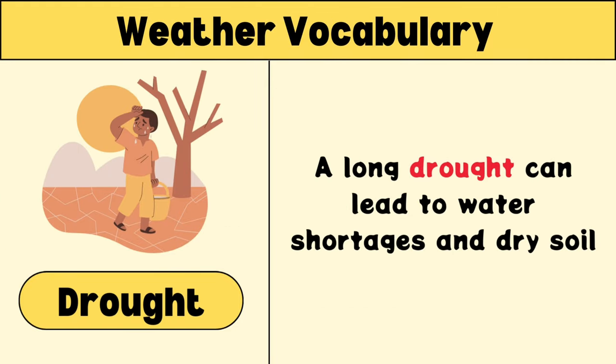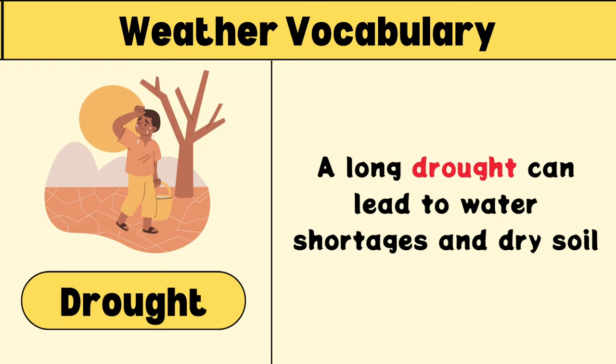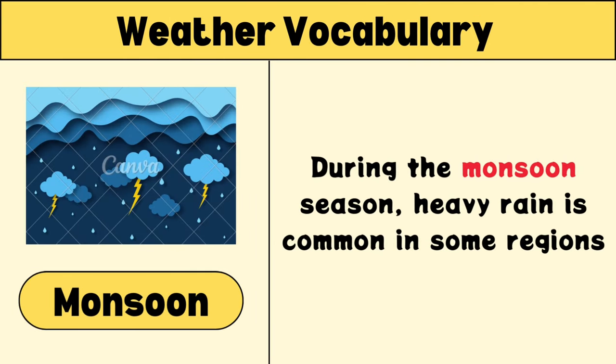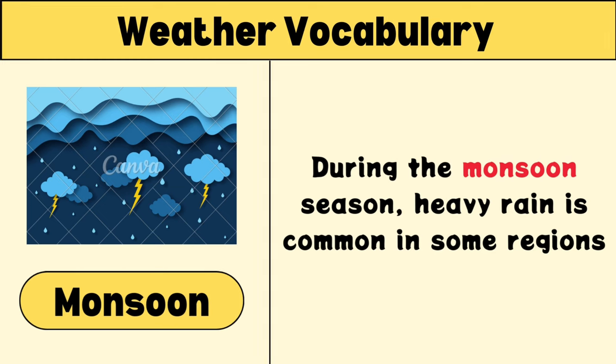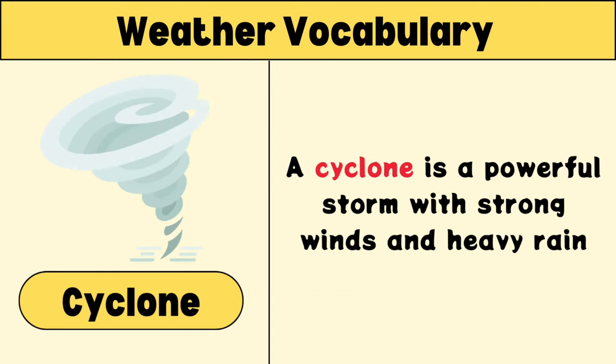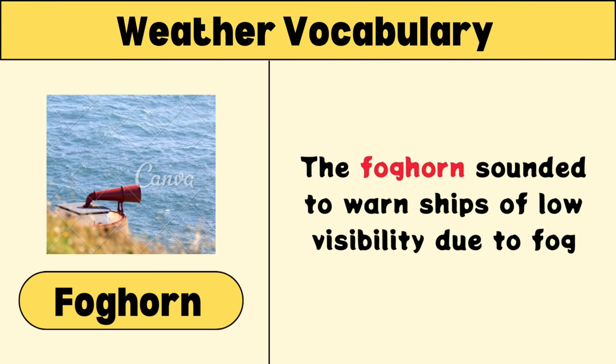Drought: a long drought can lead to water shortages and dry soil. Monsoon: during the monsoon season, heavy rain is common in some regions. Cyclone: a cyclone is a powerful storm with strong winds and heavy rain.